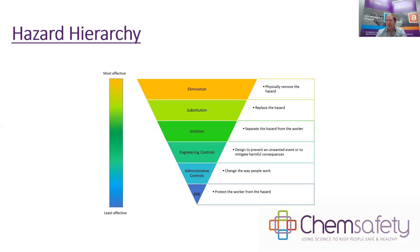Engineering controls include local exhaust ventilation, physical barriers, and other physical interventions to reduce exposure — automation as well. Administrative controls are your policies, procedures, and things you can do to change how people work: job rotation, extended rest breaks to allow recovery — for example, with carbon monoxide exposure or heat, breaks allow fresh air and cooling down. This also includes SOPs, training, procedures, and programs you have in place.